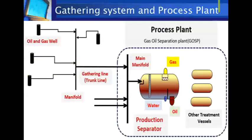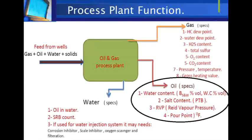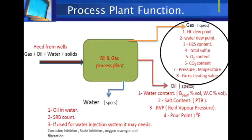The mixture is collected in a manifold before entering the process plant. The goal in the process plant is to produce oil that meets the purchaser's specification, which defines the maximum allowable amount of water, salt, and sulfur, in addition to the maximum allowable vapor pressure and maximum allowable water content.